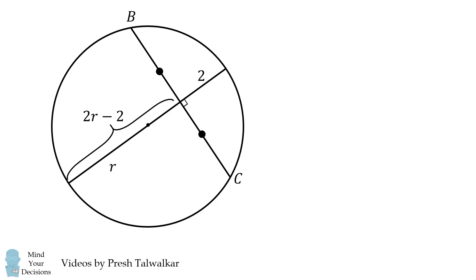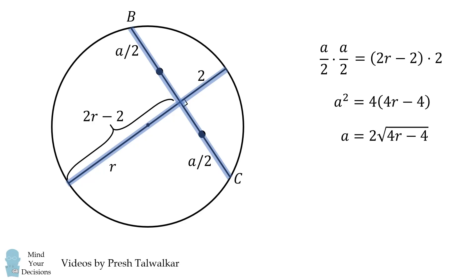Because the chord BC is bisected, each half will be equal to a over 2. We then use the intersecting chords theorem. We have a over 2 multiplied by a over 2 is equal to 2R minus 2 multiplied by 2. We can use this equation to solve for a. We want the positive value because a should be a positive length.